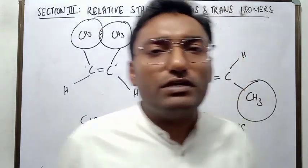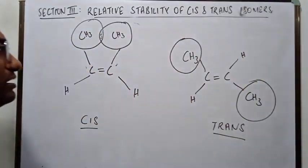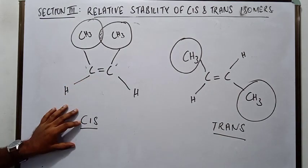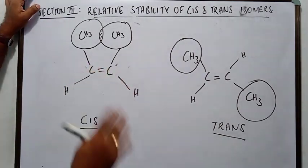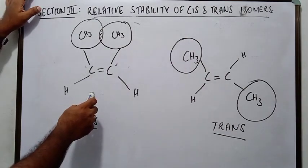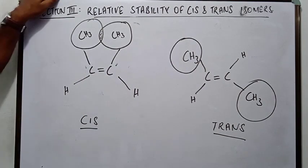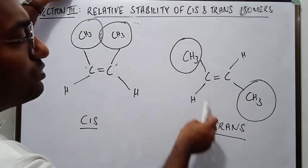For this I have illustrated here the example of bute-2-en. This is the cis isomer and this is the trans isomer of bute-2-en. This is cis bute-2-en. This is trans bute-2-en. Now I tell you that the trans isomer is more stable.